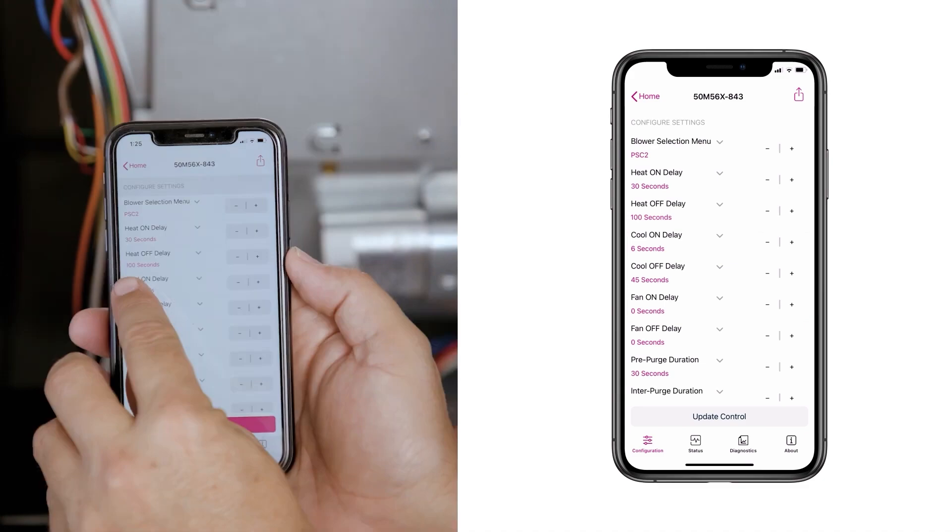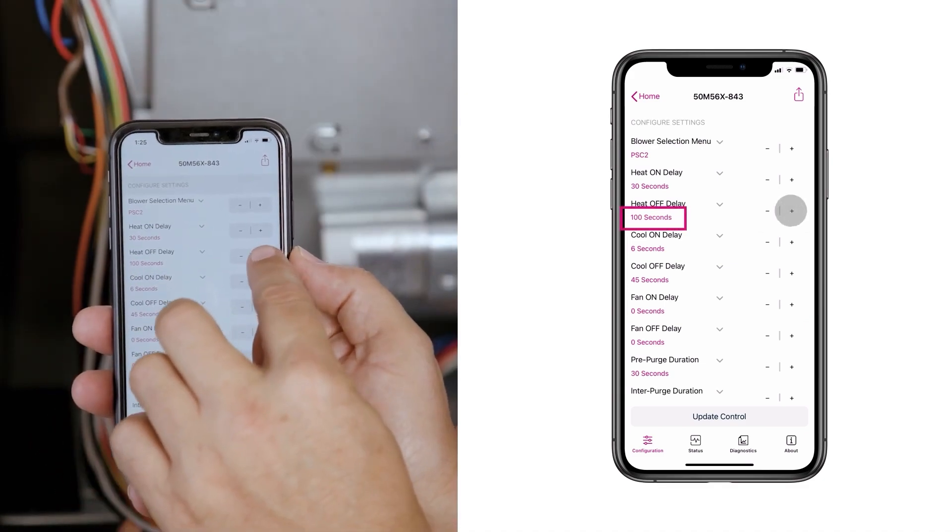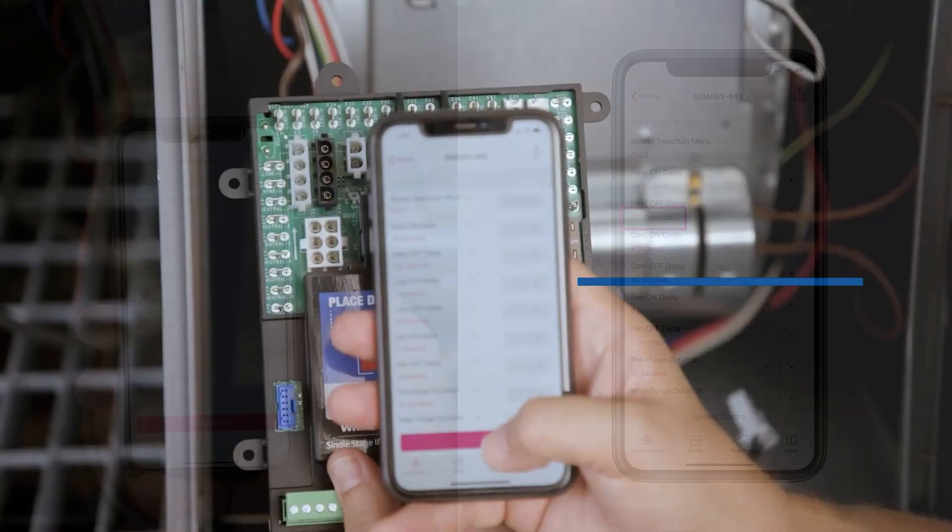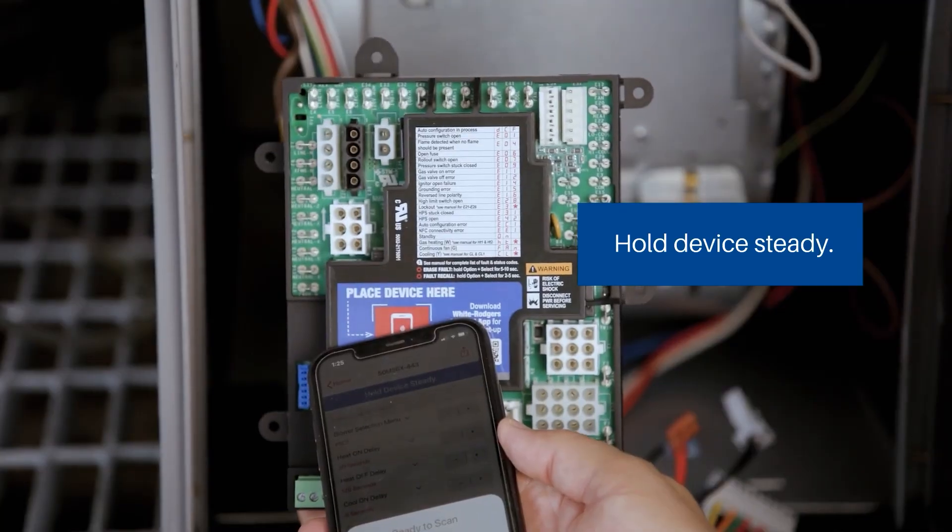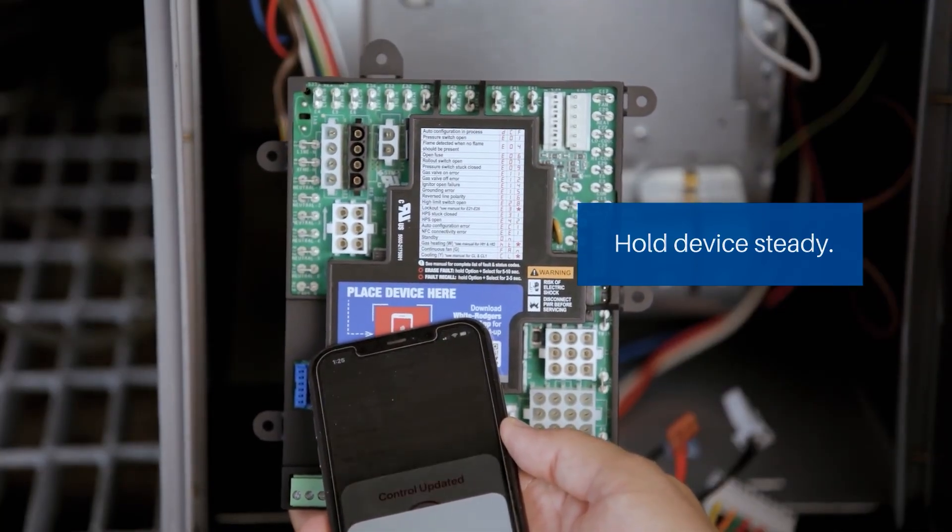The board features near-field communication, NFC, allowing it to be pre-configured using the Connect app before installation, even without power. No Wi-Fi or mobile data is required.